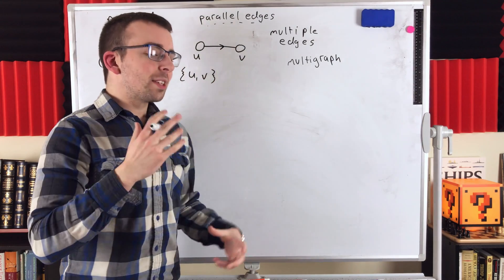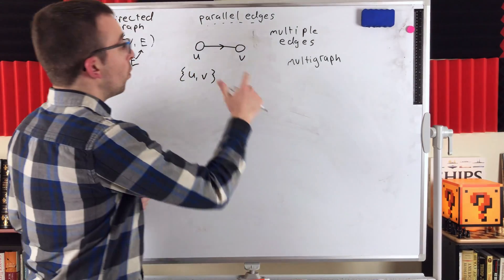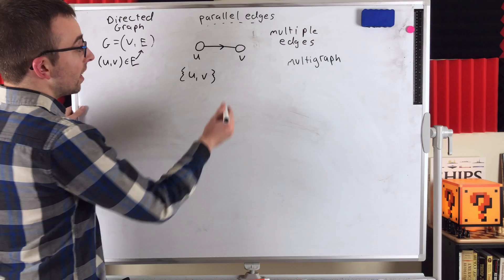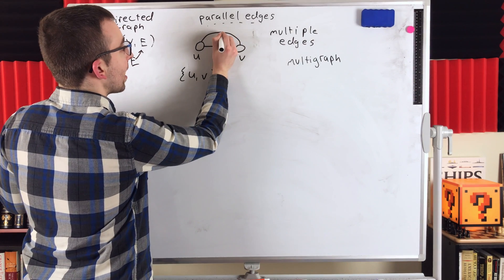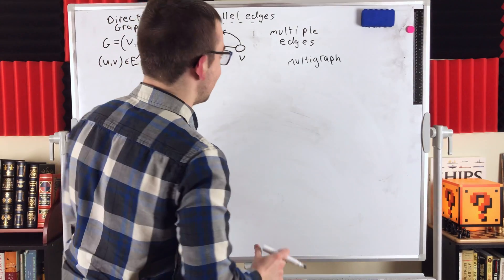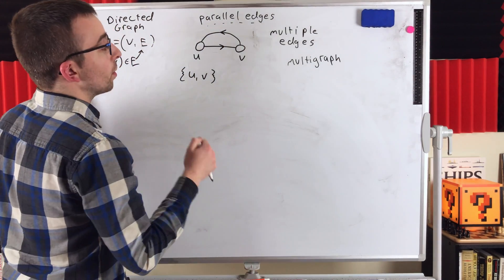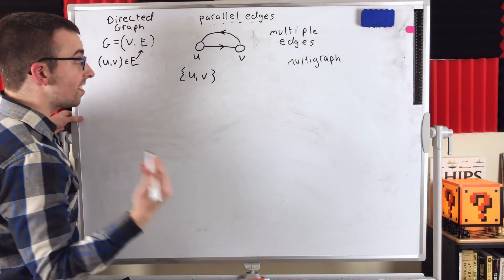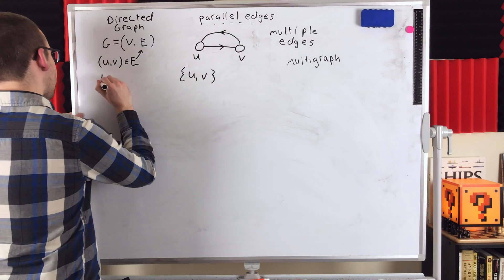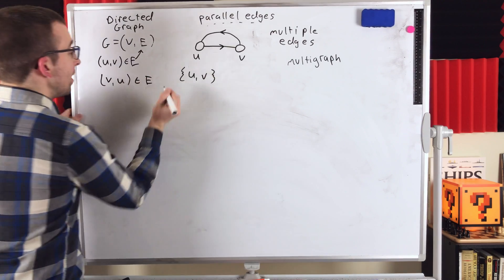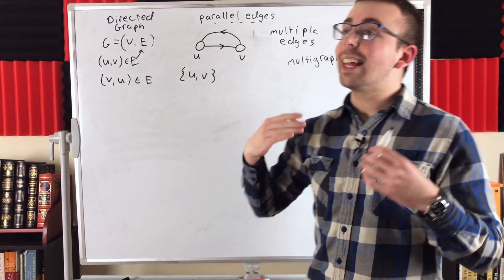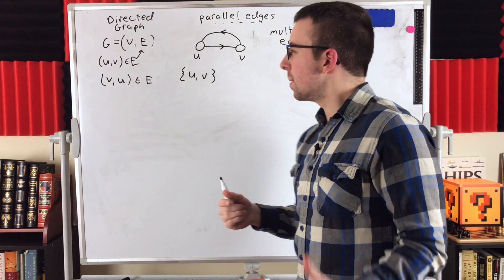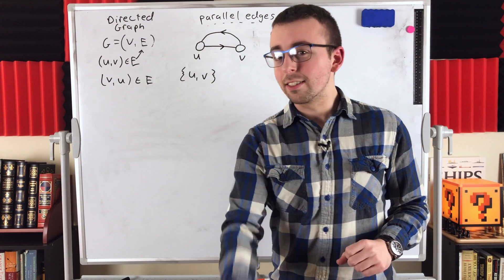Parallel edges in directed graphs get interesting because we can have two arcs with the same end vertices that are still distinct. We can have another arc going in the opposite direction but joining the same two vertices. These two arcs have the same end vertices U and V, but they are distinct arcs — one goes from U to V, the other from V to U. They form a two-cycle, a cycle of length two, and we really do consider these to be distinct arcs.